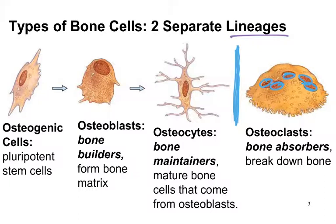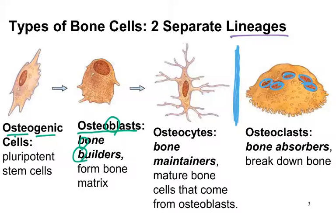The other lineage begins with osteogenic cells. Remember, osteo means bone, gen means generate. These are pluripotent stem cells and they can give rise, among other things, to the osteoblasts. The osteoblasts are the bone builders — they are the cells that secrete the specialized collagen that becomes mineralized. Once an osteoblast has secreted a lot of material that has attracted the mineral salts, it essentially has walled itself in and becomes an osteocyte. Those are the mature bone cells that have very long cytoplasmic processes that go through the canaliculi.